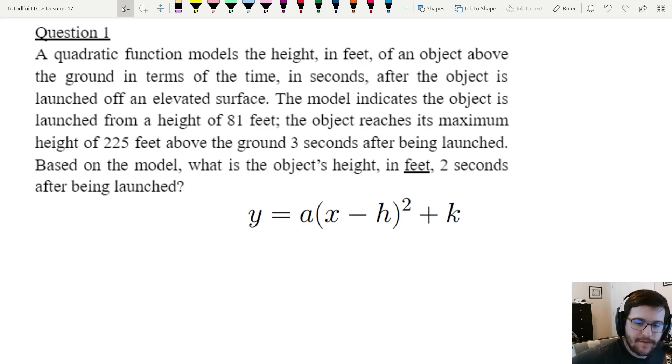Alright, let's look at this first question. I've done questions like this several times on the channel before, so I'm not going to spend too much time on this. So hopefully we see that it says the object is launched from a height of 81 feet. That is an initial height, which for a projectile quadratics problem tells us the y-intercept. Y-intercept always have an x of zero, so this is the point 0,81.